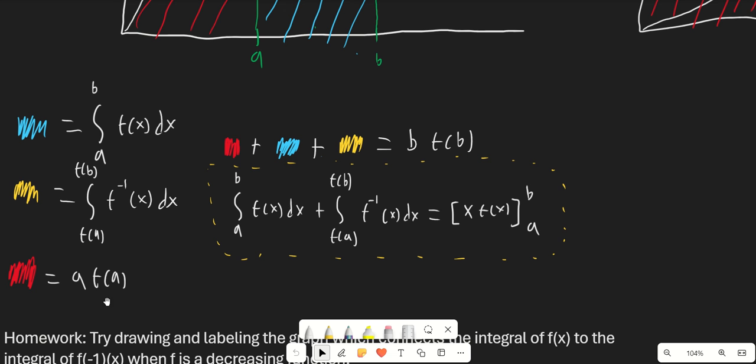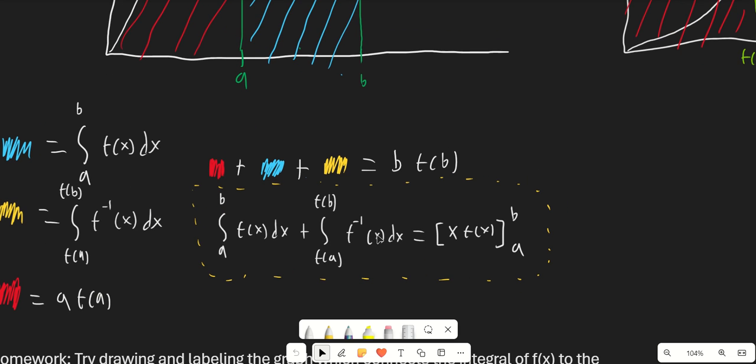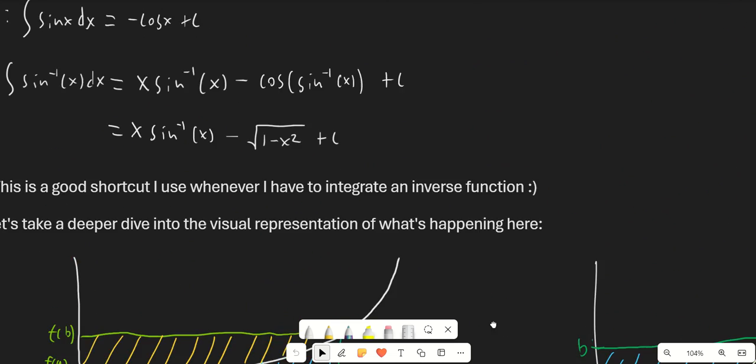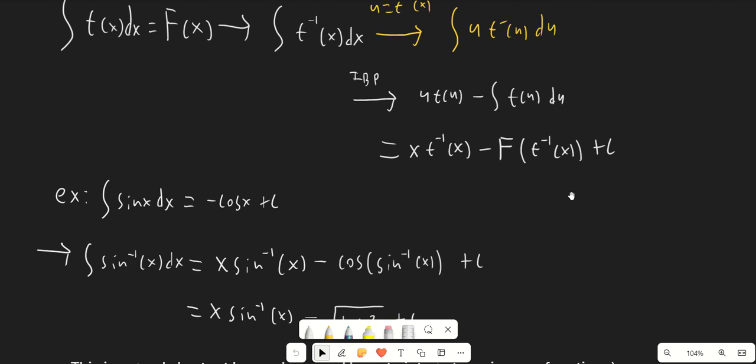We can rewrite this as red plus blue plus yellow equals b f(b). If we substitute in the definitions and reorganize everything, we find that the integral from a to b of f(x) dx plus the integral from f(a) to f(b) of the inverse function of f(x) dx equals x f(x) evaluated at b minus x f(x) evaluated at a. So this is b f(b) minus a f(a), and if you reorganize the terms you can find this directly corresponds to this formula.